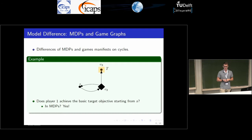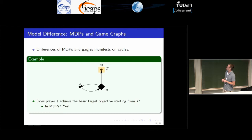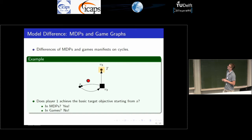The difference between MDPs and game graphs manifests on cycles. With basic target reachability from S to T: in the nature model, we always go to V2 and at some point nature will send us to our goal. But in the adversarial model this is not possible because the opponent will always send us back to our starting destination.